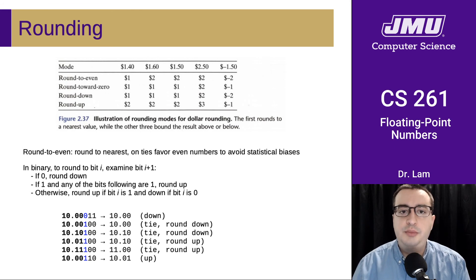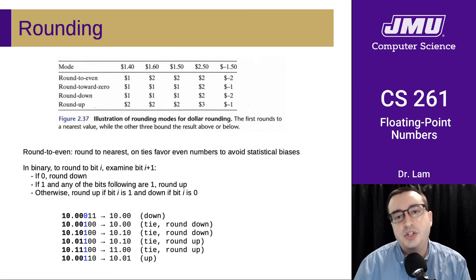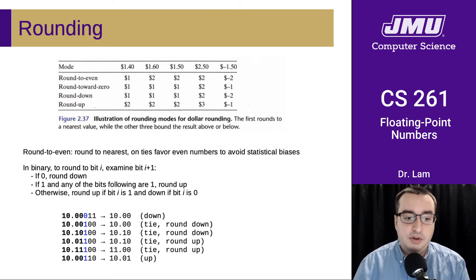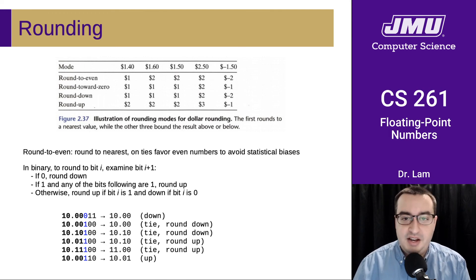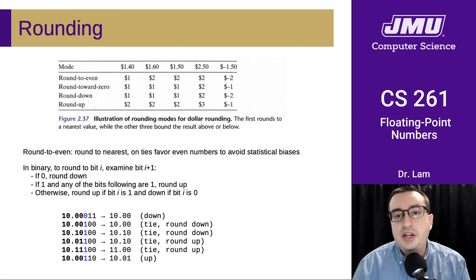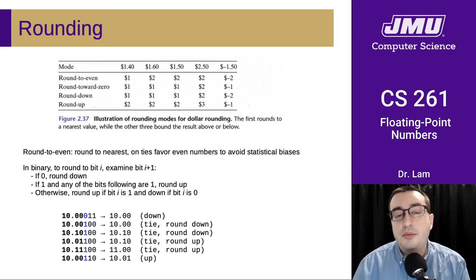The book also talks a little bit about different rounding modes. We're not going to put much emphasis on this, but I did want you to at least see that there are different rounding modes in floating-point arithmetic. Somewhat counterintuitively, the one we use most often is called round-to-even, which rounds to the nearest value and on ties it favors even numbers. This is done to avoid some statistical biases. The details aren't terribly important for this course, but they are in the book if you're interested.